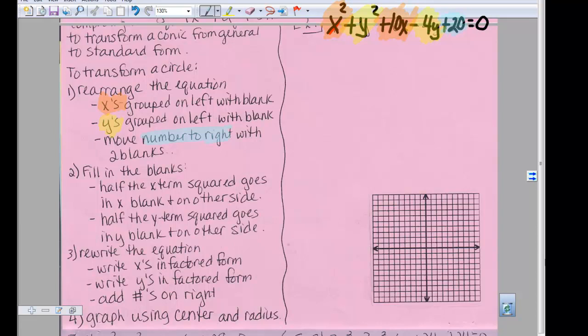So first thing we need to do is move the x's together, leave a blank, move the y's together, leave a blank, and move the 20 to the other side. Change the sign and leave two blanks. So I have followed step number one.